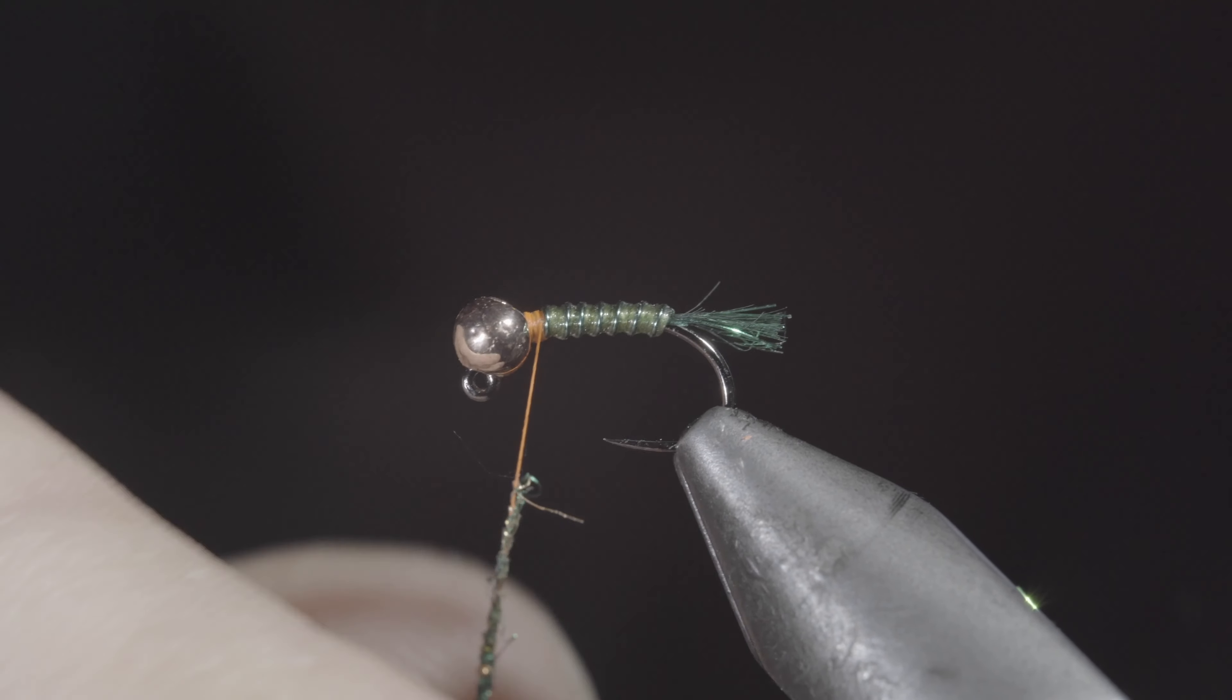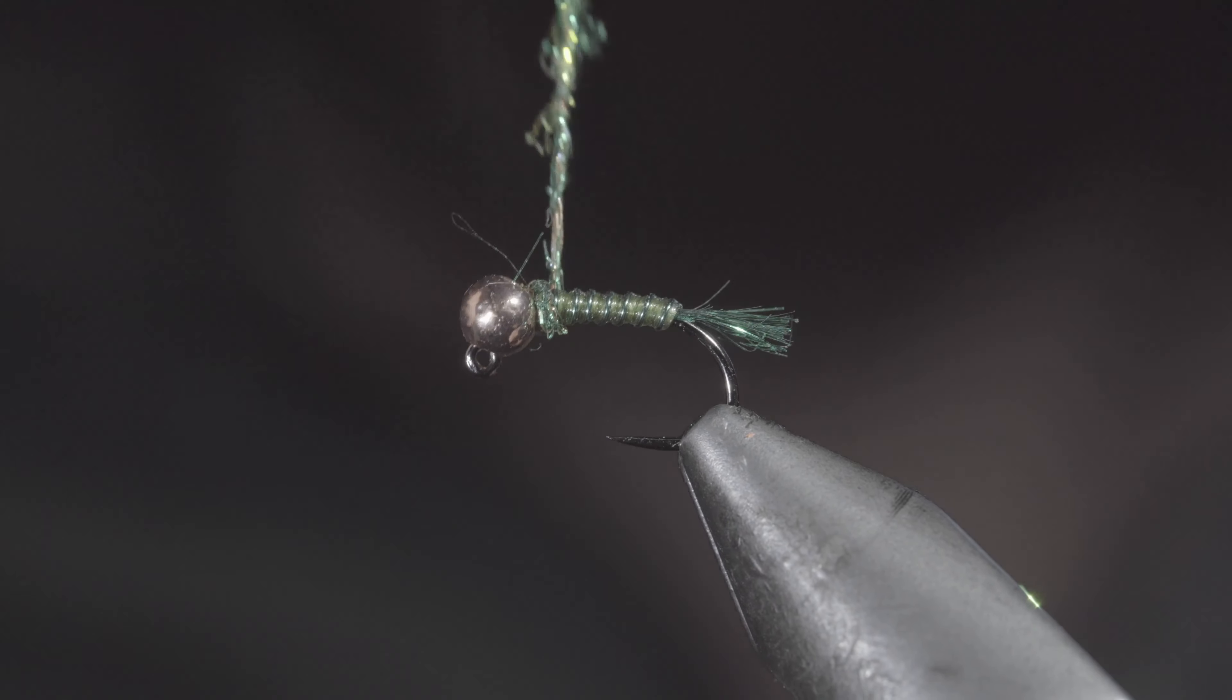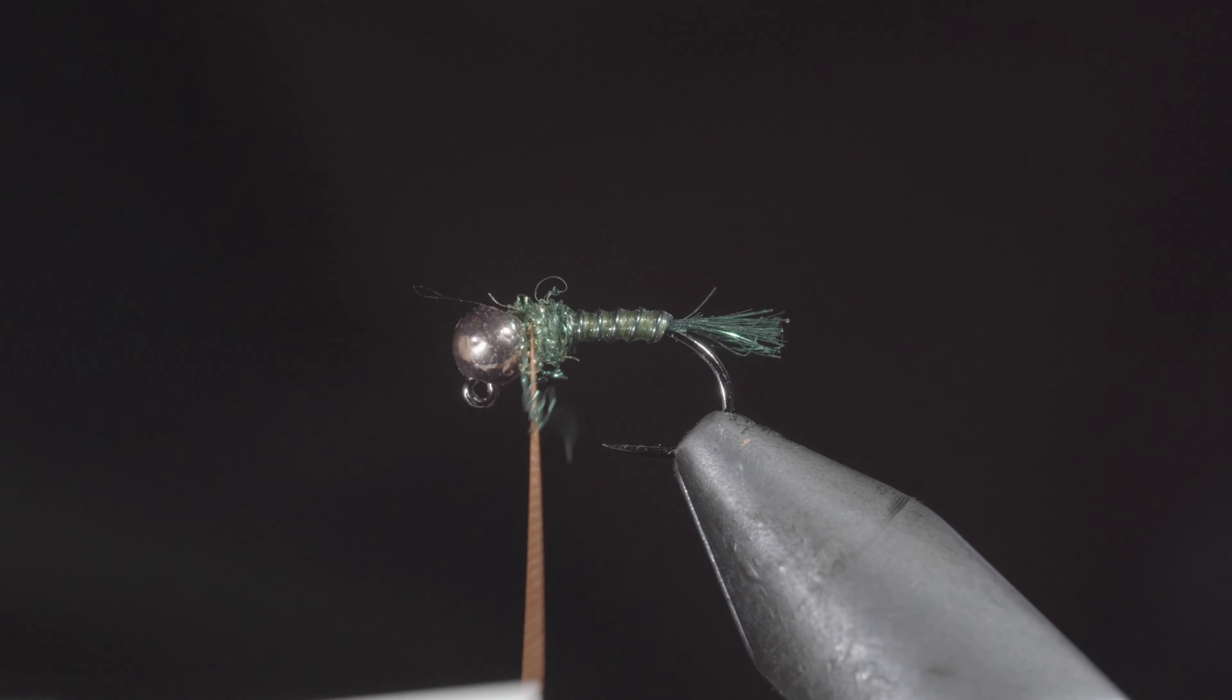Create a dubbing noodle and wrap this just behind our bead, saving a little bit of room at the head of the fly. And then brush it out to give it a nice buggy look.